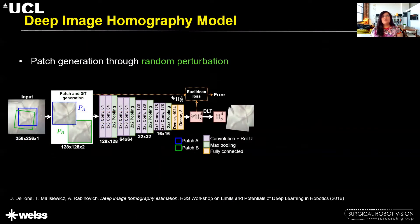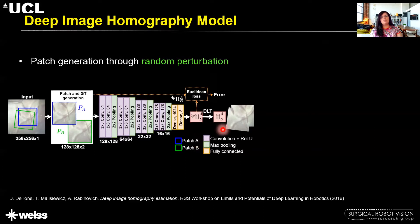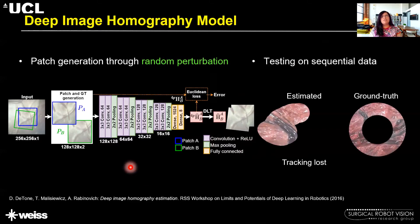The deep image homography model takes a still image, extracts two patches where the second patch is obtained by randomly perturbing the four corners of the first patch. The known ground truth transformation is used to train a VGG-type network for estimating the four-point homography, which can then be transformed into a 3×3 homography for registration. The problem with this method is that random perturbation introduces error, and even a small error when testing on sequential data results in large drift — causing the method to fail on our sequential data.